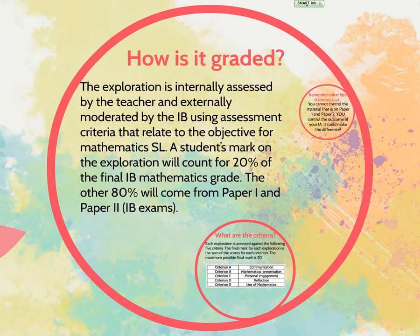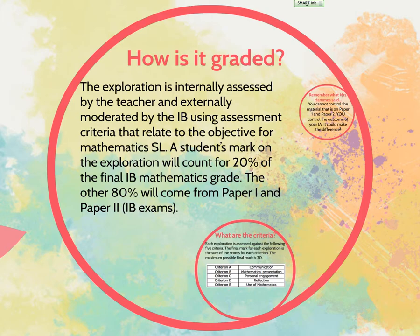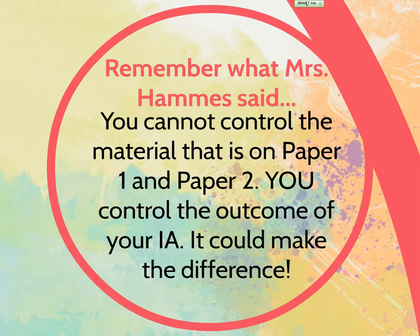So how is it graded? As mentioned, it's internally assessed by the teacher. We do have to send some of them around the world, and then the IB moderators decide whether we did a good job grading, and your grade might be adjusted. The really important thing is that it's 20% of your IB grade. The other 80% comes from paper one and paper two — those are just tests. Paper one is a math test where you can't use a calculator, and paper two is a math test where you can.